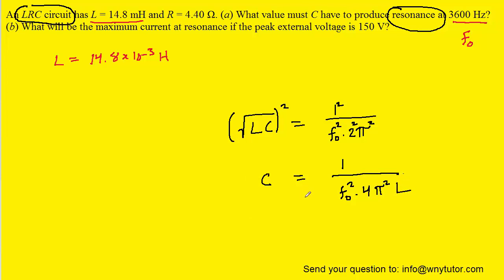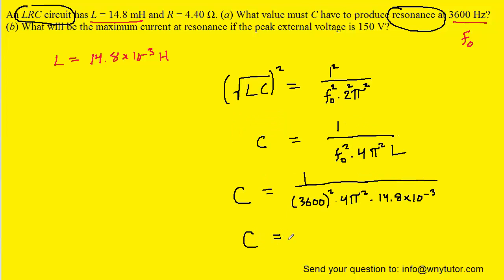At this point, we can plug in the known values for the resonance frequency as well as the inductance. And when you punch that into your calculator, you should get approximately 1.32 times 10 to the minus 7.